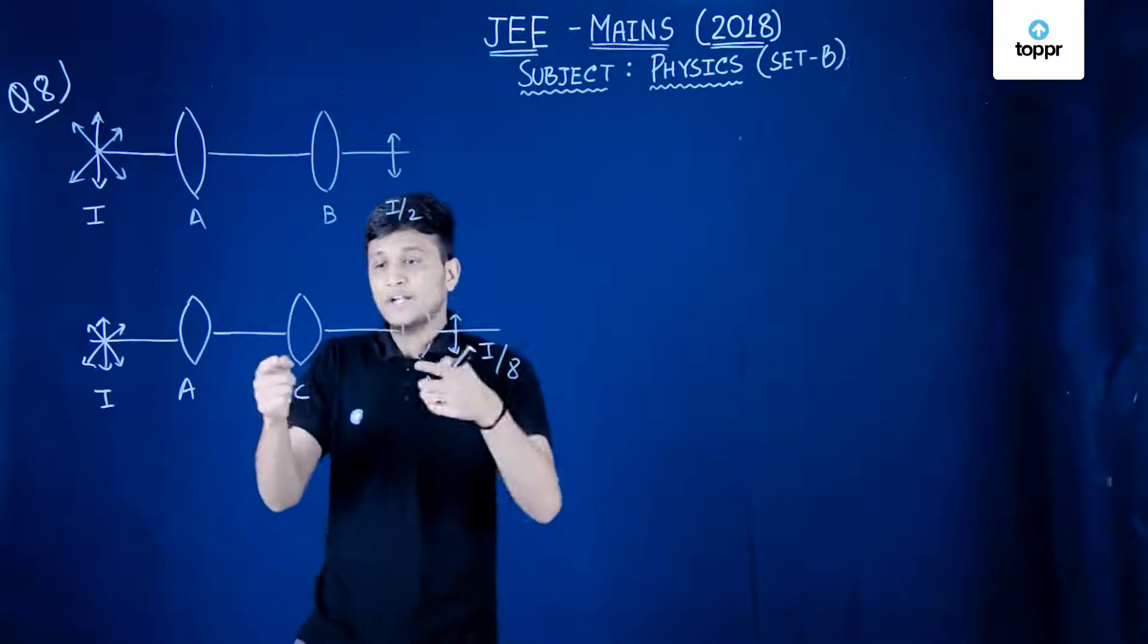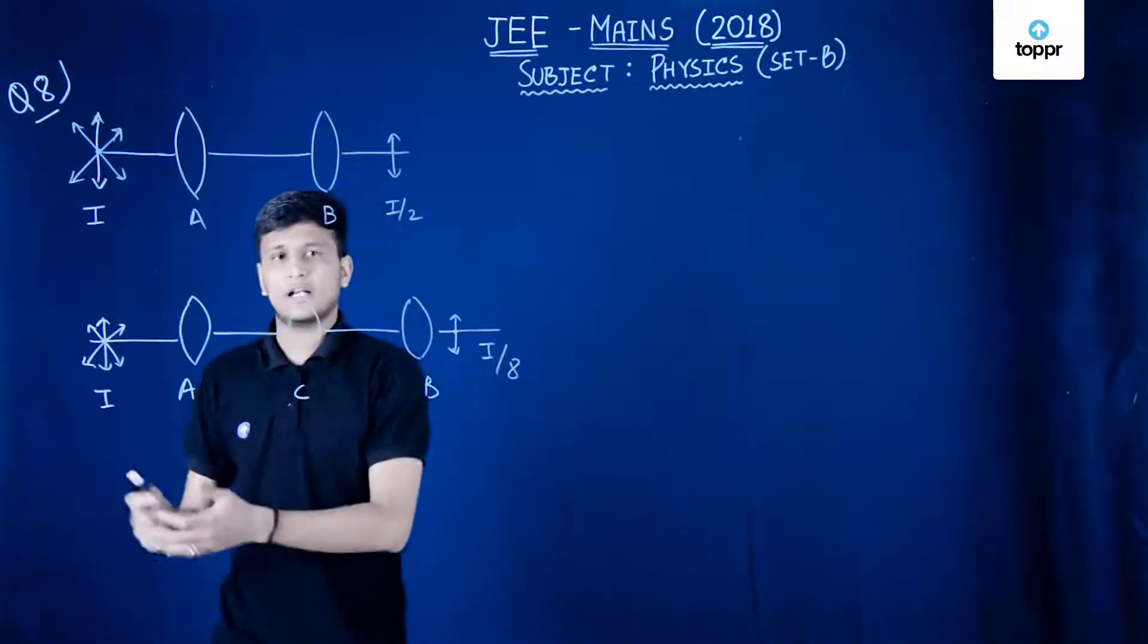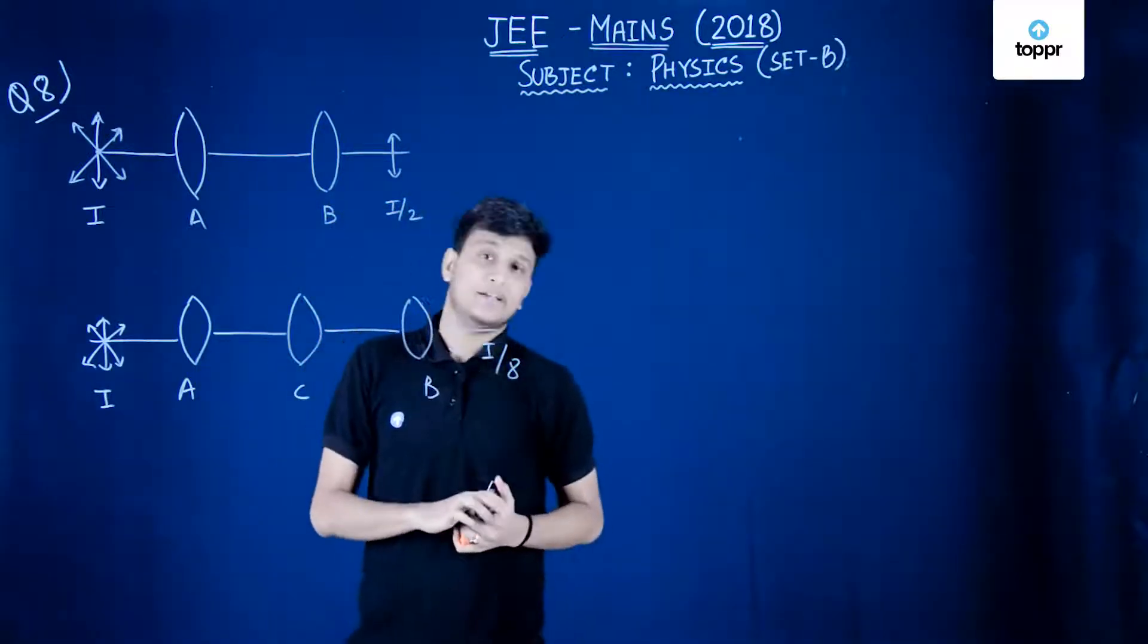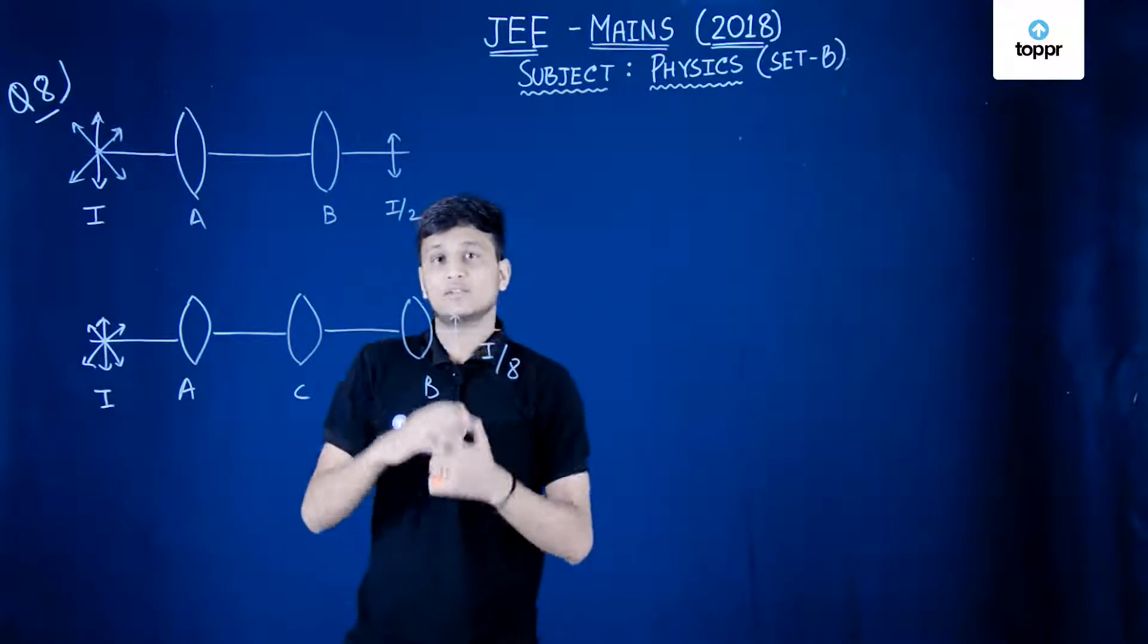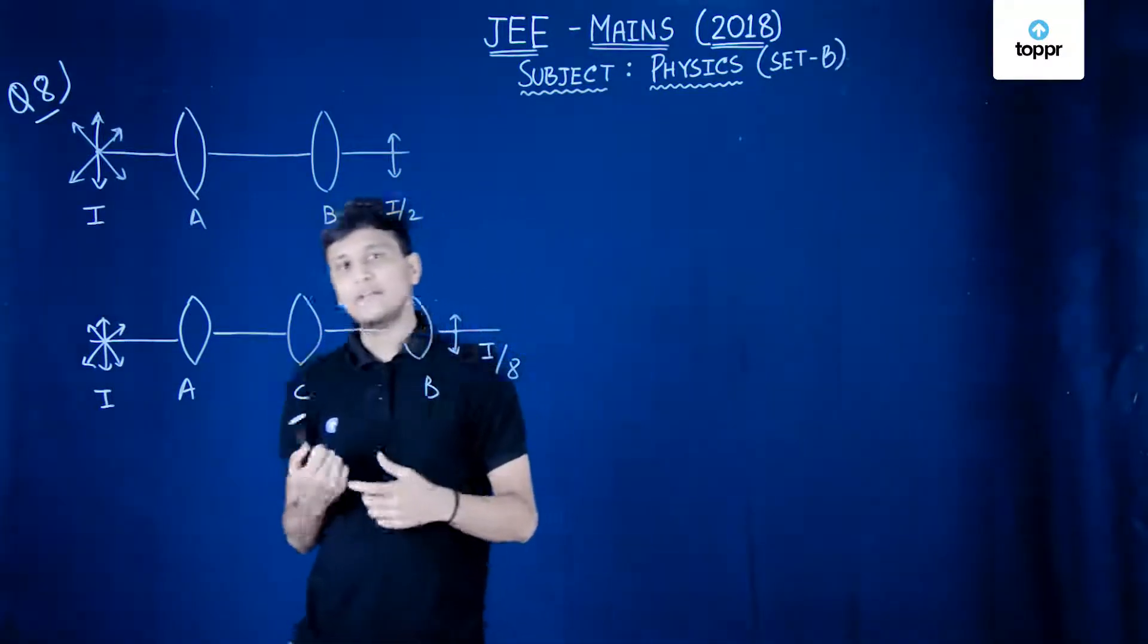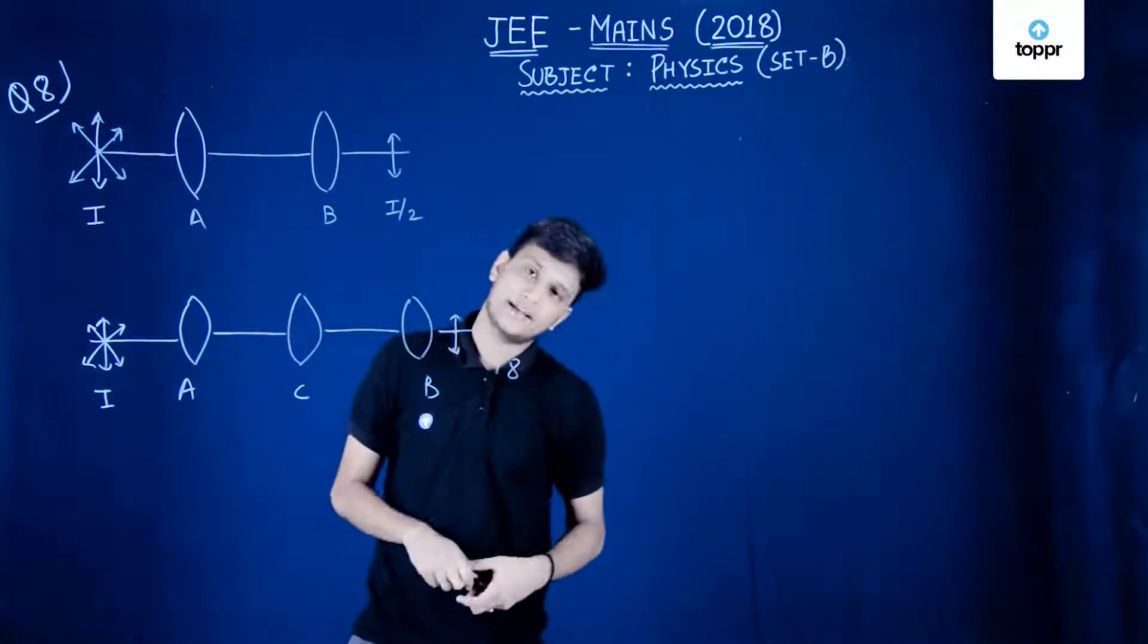Now what we have done is we have introduced another polarizer C between A and B, and now when we found out the intensity behind B was I by 8. So C did something, the intensity became from I by 2 to I by 8. We have to find out the angle between the polarizers A and C.